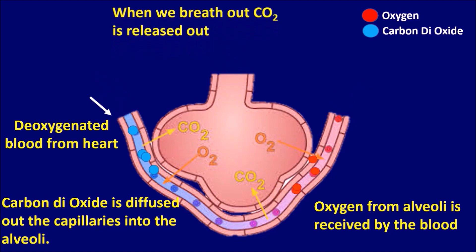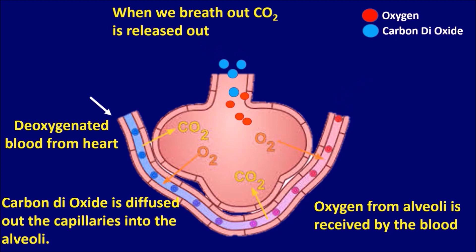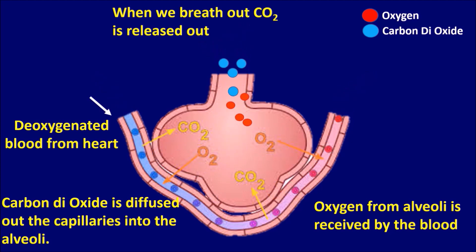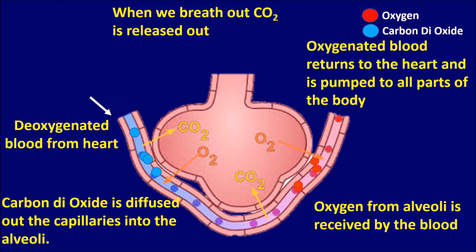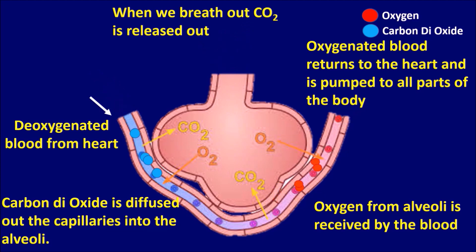When we breathe out, carbon dioxide from the alveoli is released out into the atmosphere through the respiratory tract. The oxygen-rich blood, or oxygenated blood, returns to the heart and is pumped to all parts of the body. This is how gaseous exchange takes place at lungs level.